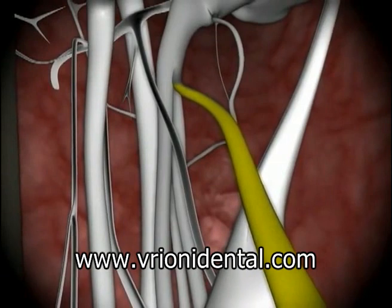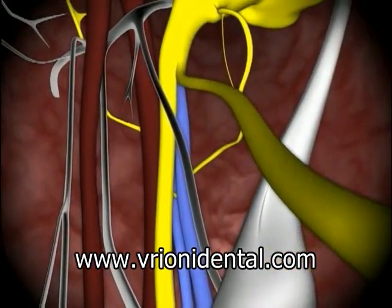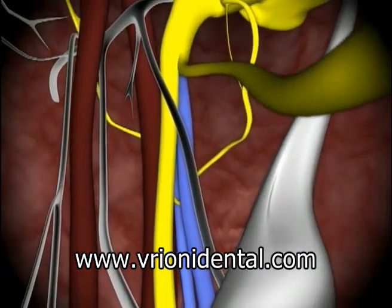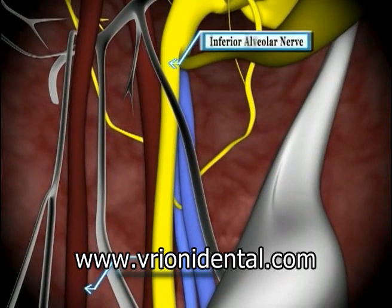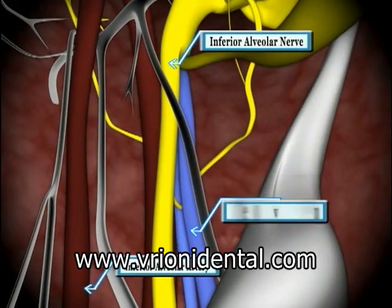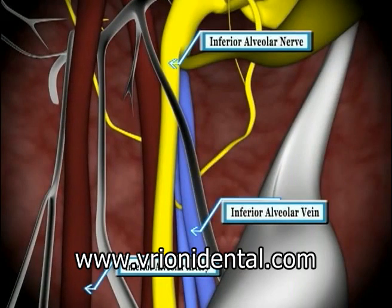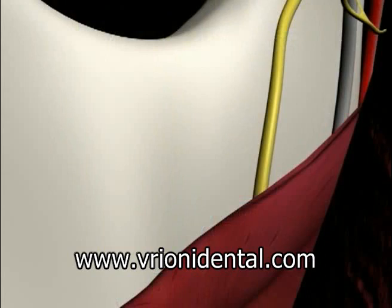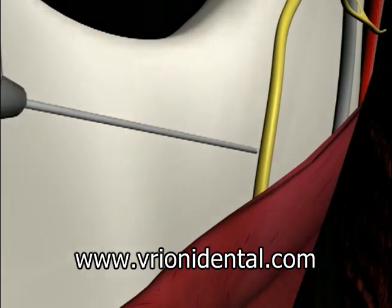We're just about there. Notice that we are approaching just above the lingual, and the inferior alveolar neurovascular bundle can be visualized. After traveling about 20 to 25 millimeters, we finally arrive and make gentle contact with the ramus, ideally just above the mandibular foramen and very close to the inferior alveolar nerve.